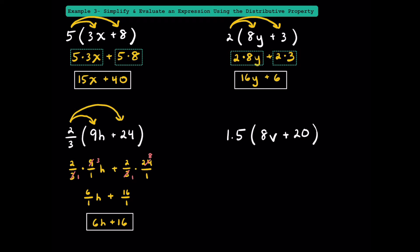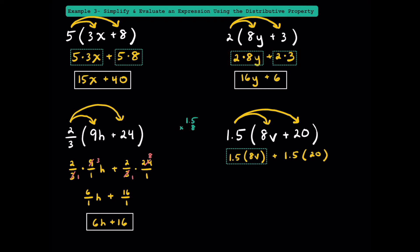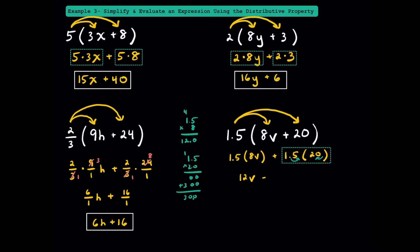Now let's try one with decimals. We distribute 1.5 to 8v to get 1.5 times 8v, then distribute 1.5 to 20. A shortcut for 1.5 times 20 is to move the decimal one space right on 1.5 and one space left on 20, turning it into 15 times 2, which equals 30. So our final expression is 12v plus 30.